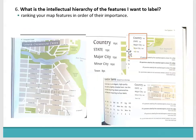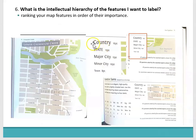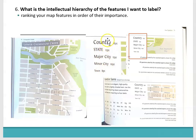Number six: what is the intellectual hierarchy of the features I want to label? That's the interesting thing about when you pick up a map — the lettering is at different sizes. It's a hierarchical thing that creates importance on the map. In cartographic practice, the country might be 16 point, the state 12 point, major cities might also be 12 point, but those two are capitalized. You can deal with hierarchy by capitalizing something to make it more important, and then use a different type of font at the same size. Just by doing these little subtle things, we've created a hierarchy: country, state, major city, minor city, and town — each one having a different style and size.